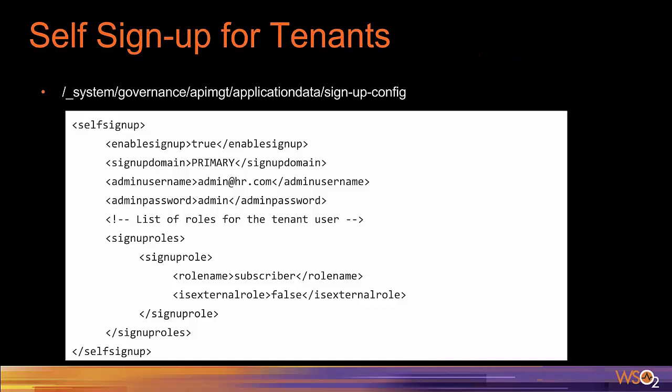The next feature is self-signup for tenants. In the previous release, self-signup was available only for the super tenant. With this release, self-signup is available for all tenants. By default it is disabled for tenants and enabled for super tenant. To enable it for tenants, login to the management console as tenant admin, browse and open the signup config file, and add the configuration. Enable self-signup by setting the value to true. Signup domain specifies whether the user should be added to the primary or secondary user store. Define the admin username and password, and specify signup roles which will be assigned to the signup user.